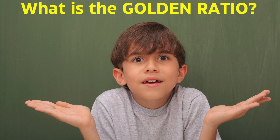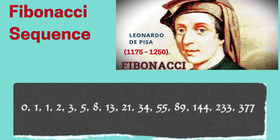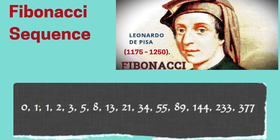What is the golden ratio? To understand it, let's first dive into the Fibonacci sequence, named after the Italian mathematician Leonardo of Pisa, also known as Fibonacci. In his book Liber Abaci, translated as The Book of Calculation, he introduced Europe to a sequence of numbers that would become legendary.